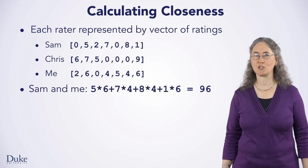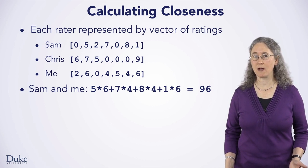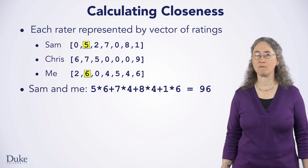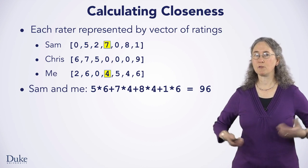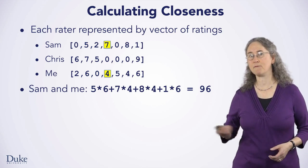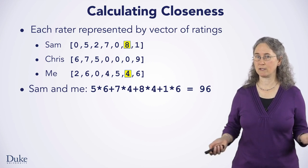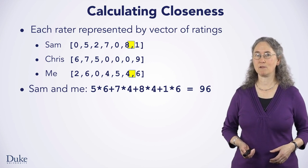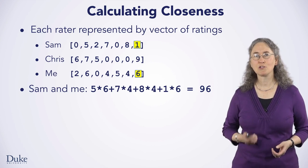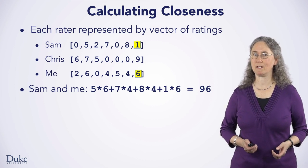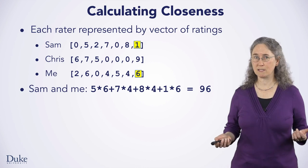Let's look at how these vectors are used to calculate a similarity weight. We'll walk through the calculation for seeing how close I am to Sam — we multiply the ratings for each movie Sam and I both rate. Sam rates this movie a 5, I rate it a 6, the product is 30. The next movie we both rate has a 7 by Sam and a 4 by me, so the product is 28. For this movie, Sam gives an 8 and I give a 4, the product is 32. The last movie we both rate wasn't liked by Sam, who gave it a 1, and I gave it a 6, the product is 6. So the similarity weight between Sam and me is 30 + 28 + 32 + 6, which is 96.